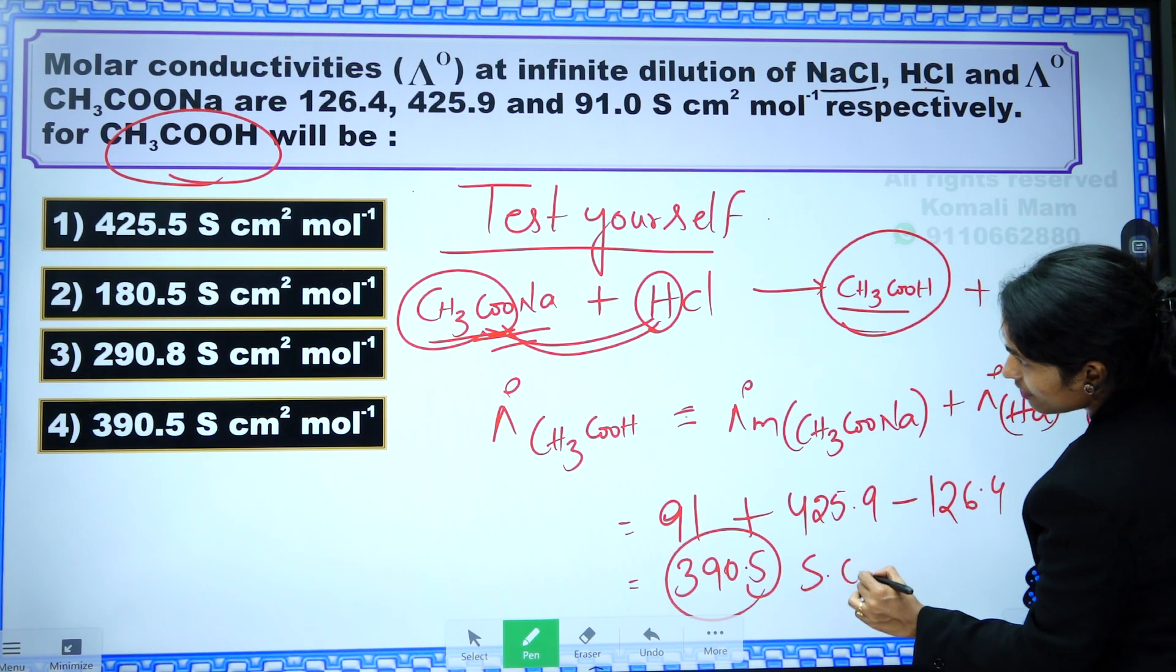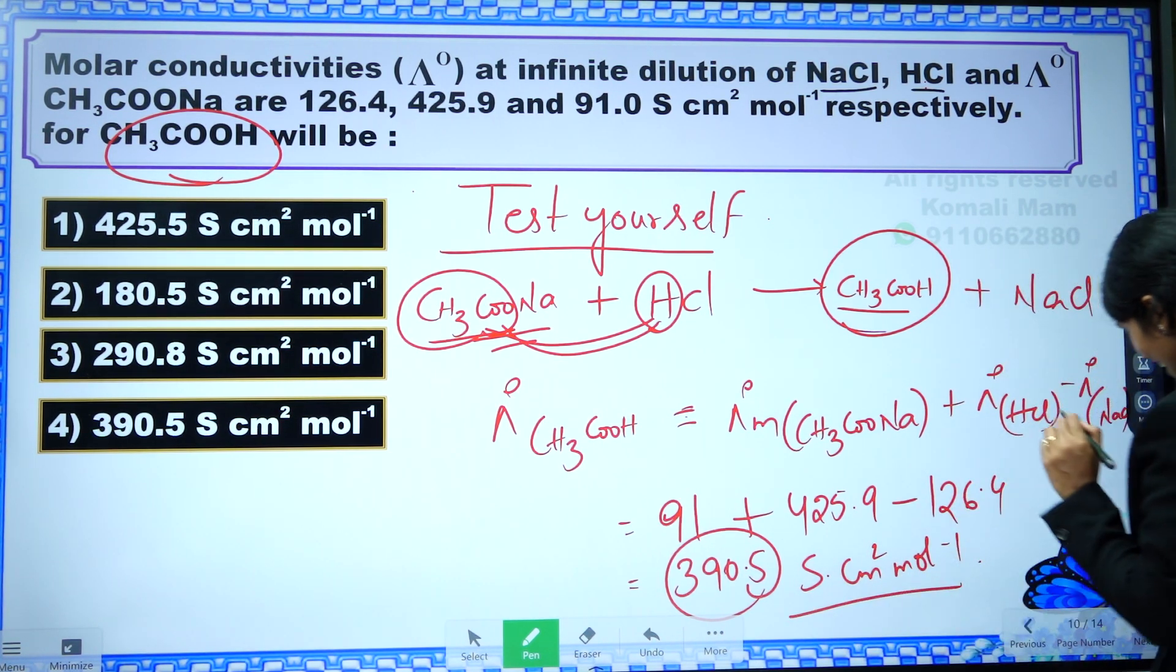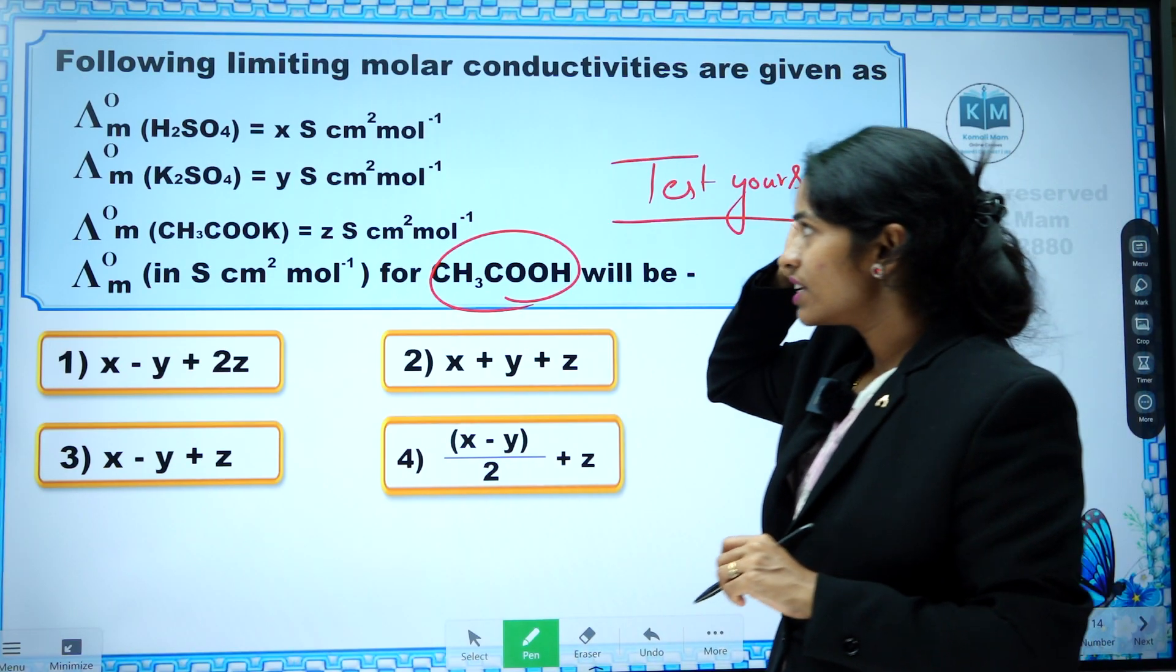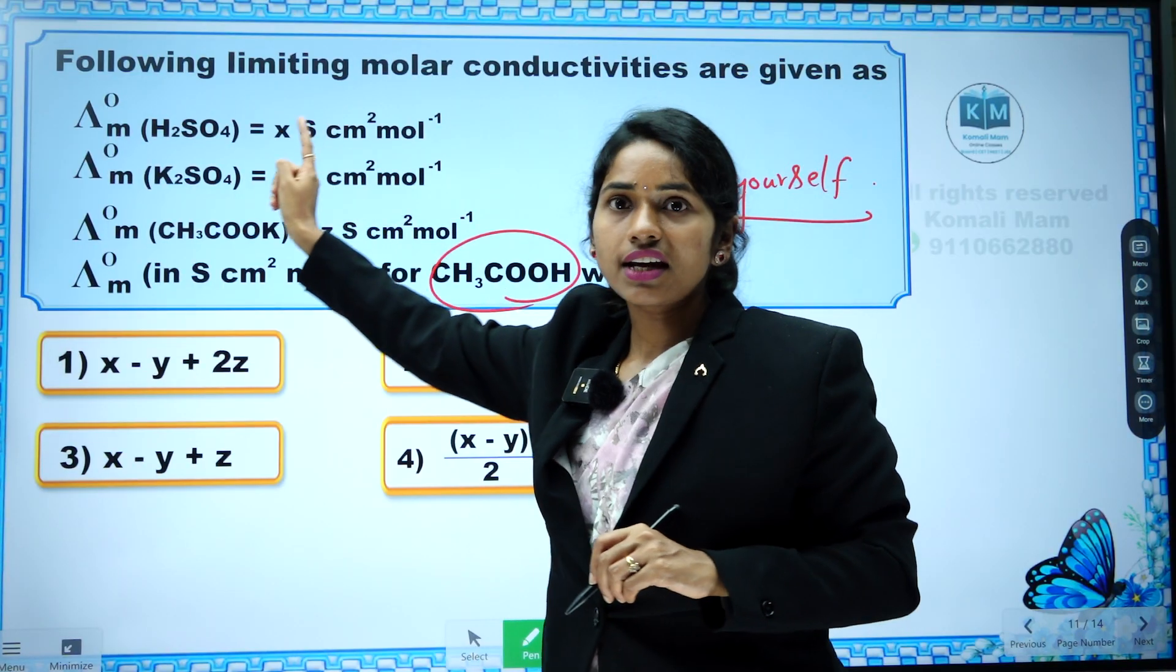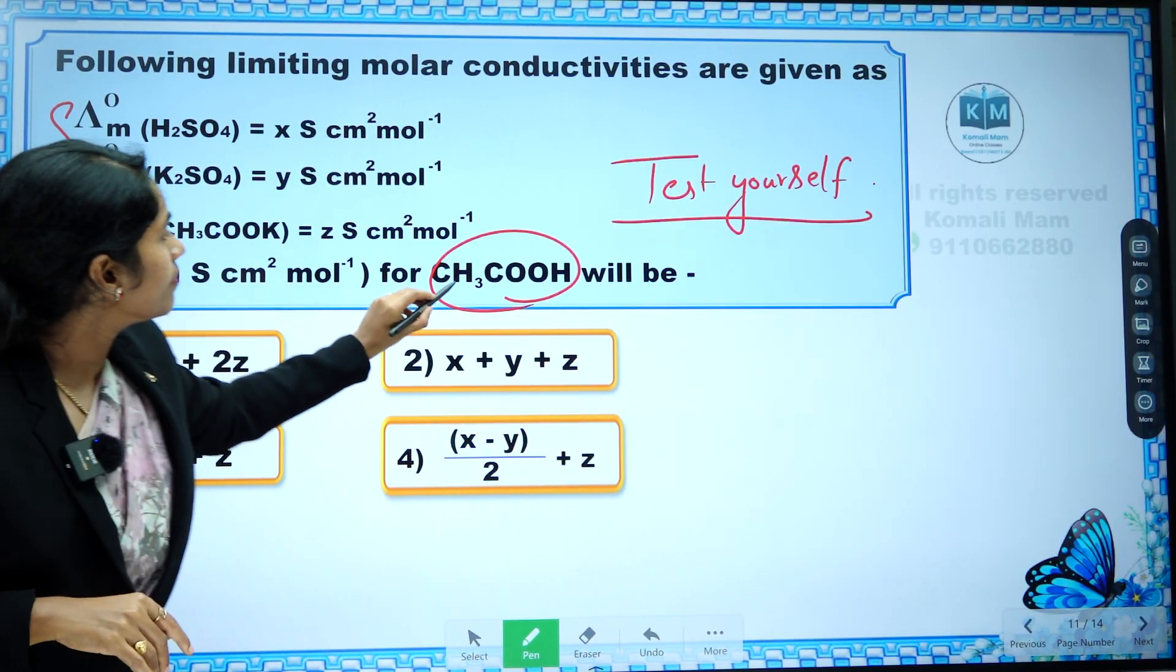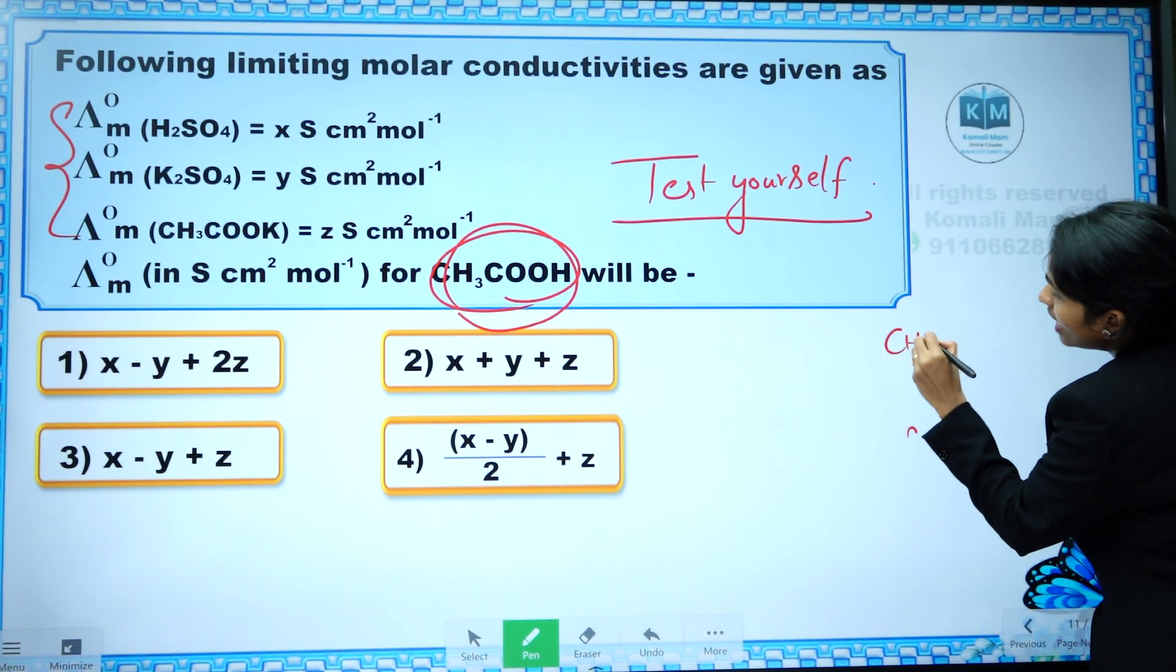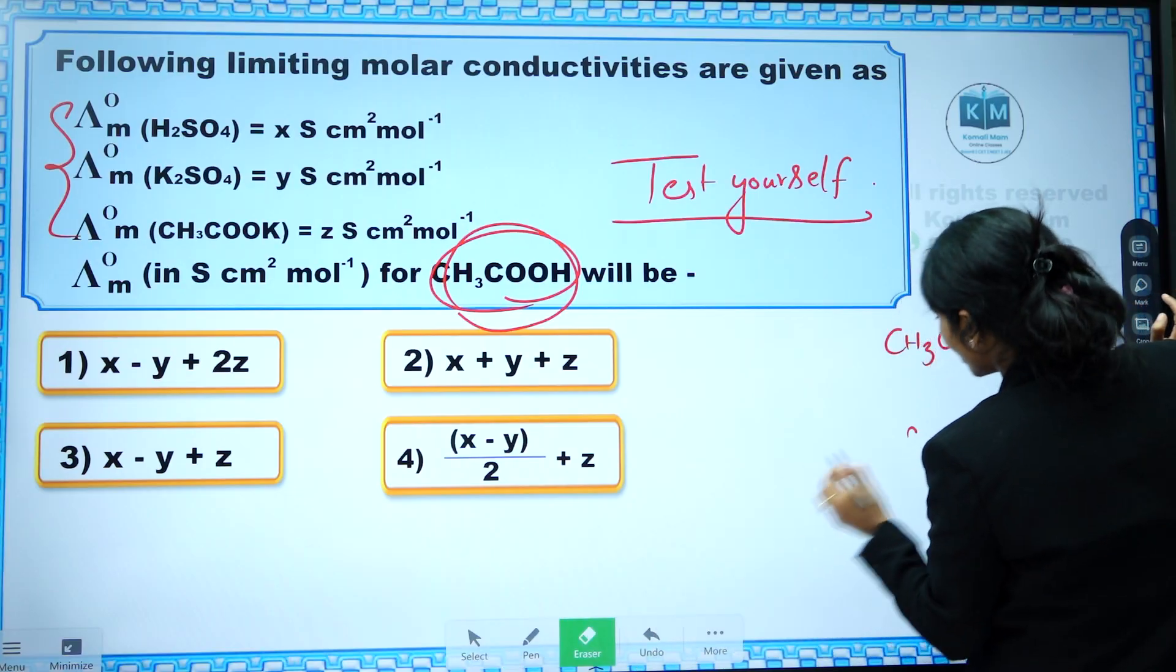I guess this one we have solved in the previous video itself, I am right? Question is repeated, lucky test yourself question. See the next one. Following limiting molar conductivities are given as we have three data and they were asking acetic acid, okay?